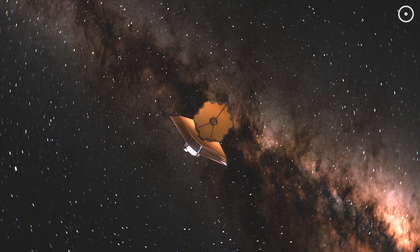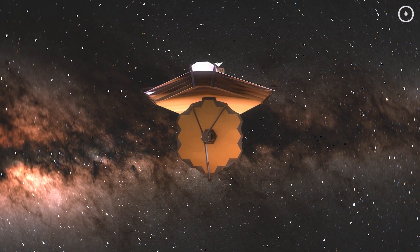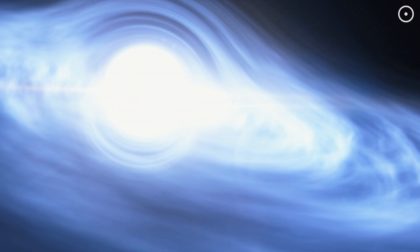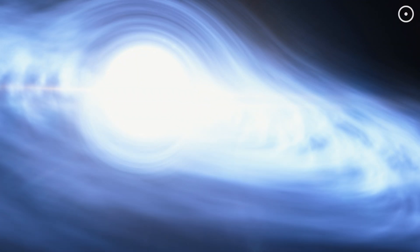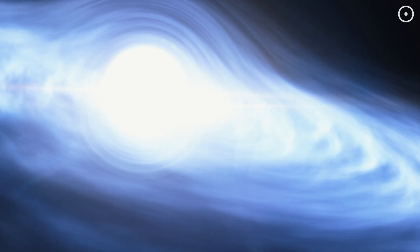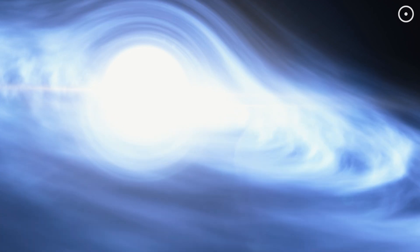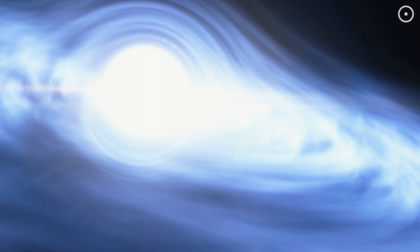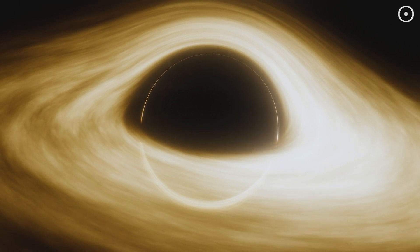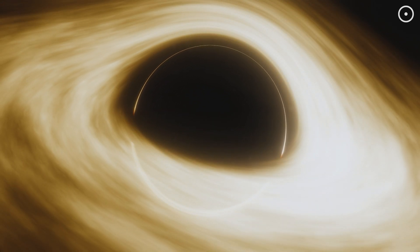But here's the really exciting part—we might just be scratching the surface. The team has proposed something ambitious: they want to point Webb at our galaxy's black hole for 24 uninterrupted hours. Why? Because right now, it's like trying to listen to a whispered conversation at a rock concert. There's so much noise in the observations that some of the finest details are getting lost. With 24 hours of continuous observation, they could filter out this noise and potentially see things no human has ever seen before.